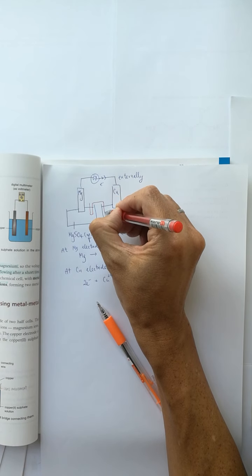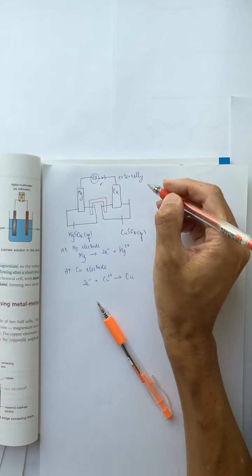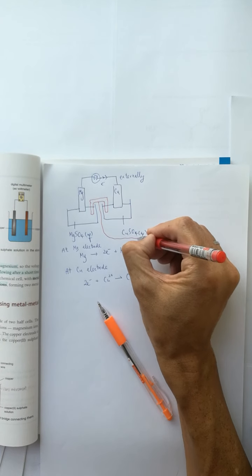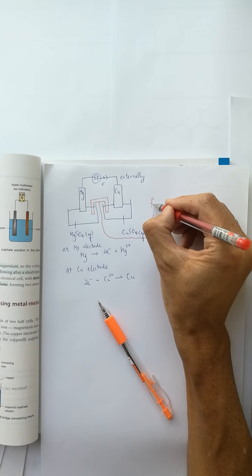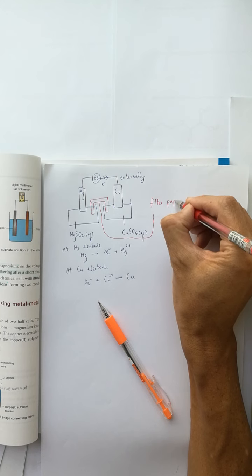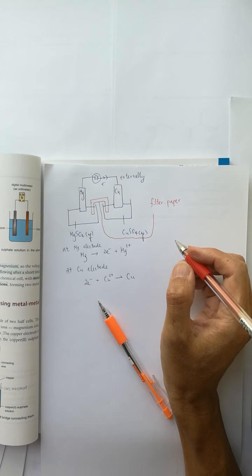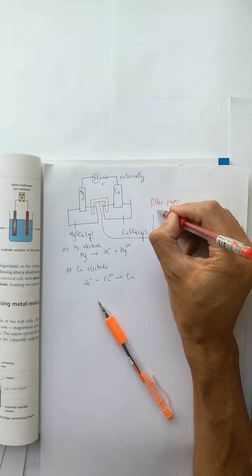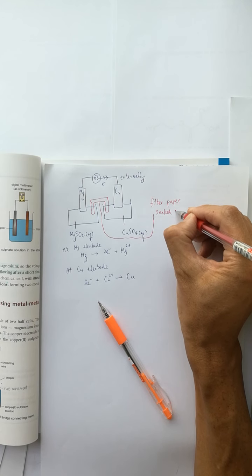To complete the circuit, we use a filter paper. This filter paper is not dry — it is wet with an electrolyte.